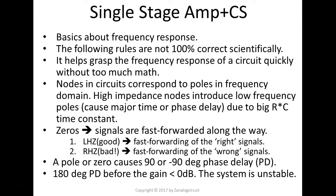And also there are zeros. Zeros essentially correspond to the case where the signals are fast forwarded along the way. So for the zeros, there are two types of zeros. One is the left hand zeros, LHZ. Those are usually good zeros. That corresponds to fast forwarding of the right signals. There's another type of zero, which is a right hand zero. That is really bad. That corresponds to the case of a fast forwarding of the wrong signals, the signals with the wrong phase.